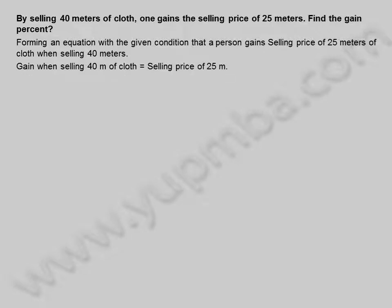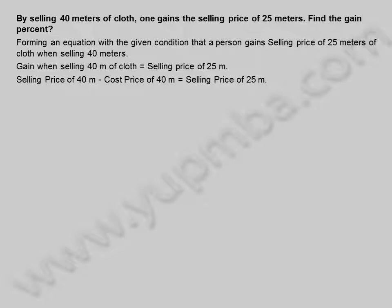Gain when selling 40 meters of cloth is equal to selling price of 25 meters. Selling price of 40 meters minus cost price of 40 meters is equal to selling price of 25 meters. Selling price of 40 meters minus selling price of 25 meters is equal to cost price of 40 meters.